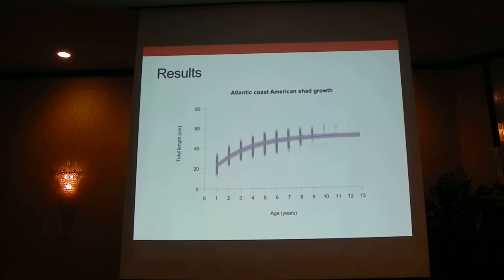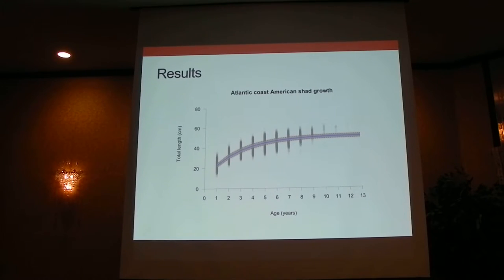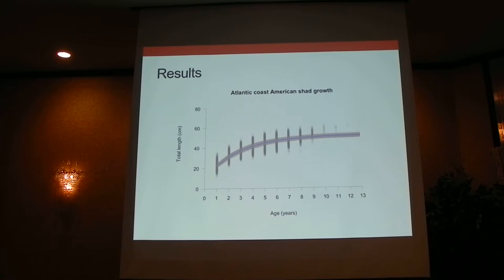Here are some of our results. This is the coast-wide growth curve. The x-axis is age in years, the y-axis is total length in centimeters. The gray dots represent individuals at each age and their total lengths, the blue line is the mean, and the red dashed lines are the 95% credible intervals. This is for all 12 populations combined.